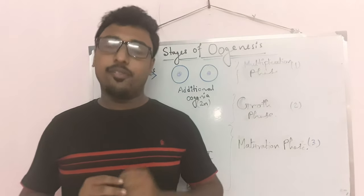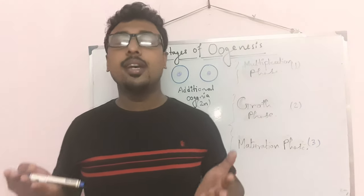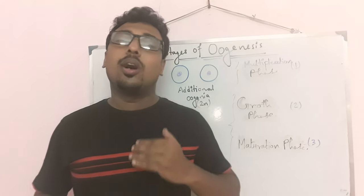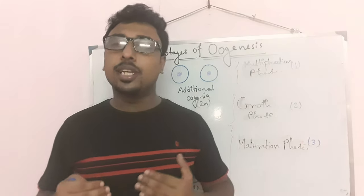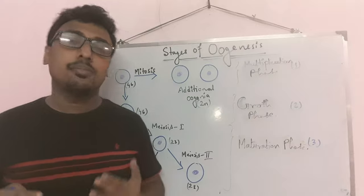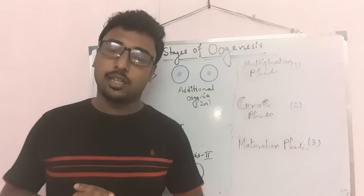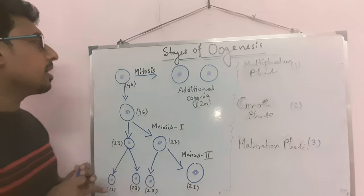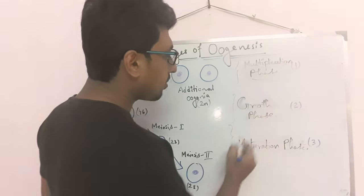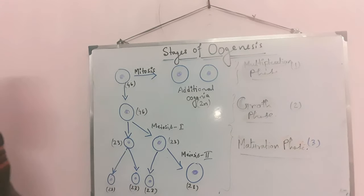There are some stages of oogenesis. Number one is the multiplication phase, number two is the growth phase, and number three is the maturation phase. The time period: oogenesis starts in the embryo or fetus — that is the multiplication phase — but the growth phase of oogenesis starts in puberty.